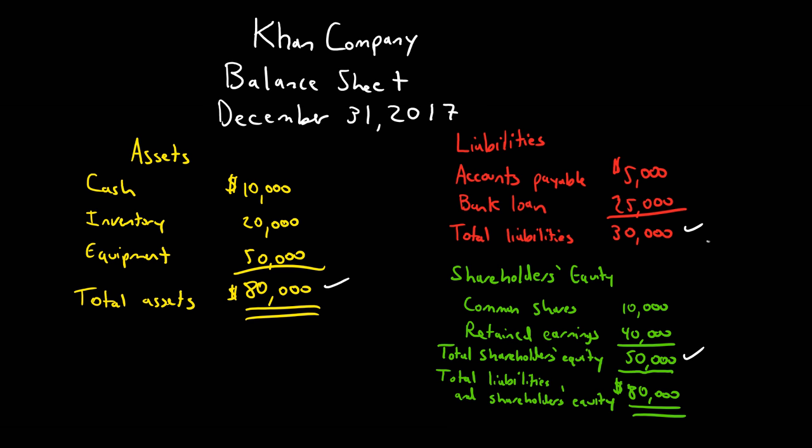So, if I add my liabilities, $30,000, plus my shareholder's equity, $50,000, I get total liabilities and shareholder's equity of $80,000. And you can see my assets, my total assets, equals my total liabilities, plus my shareholder's equity.